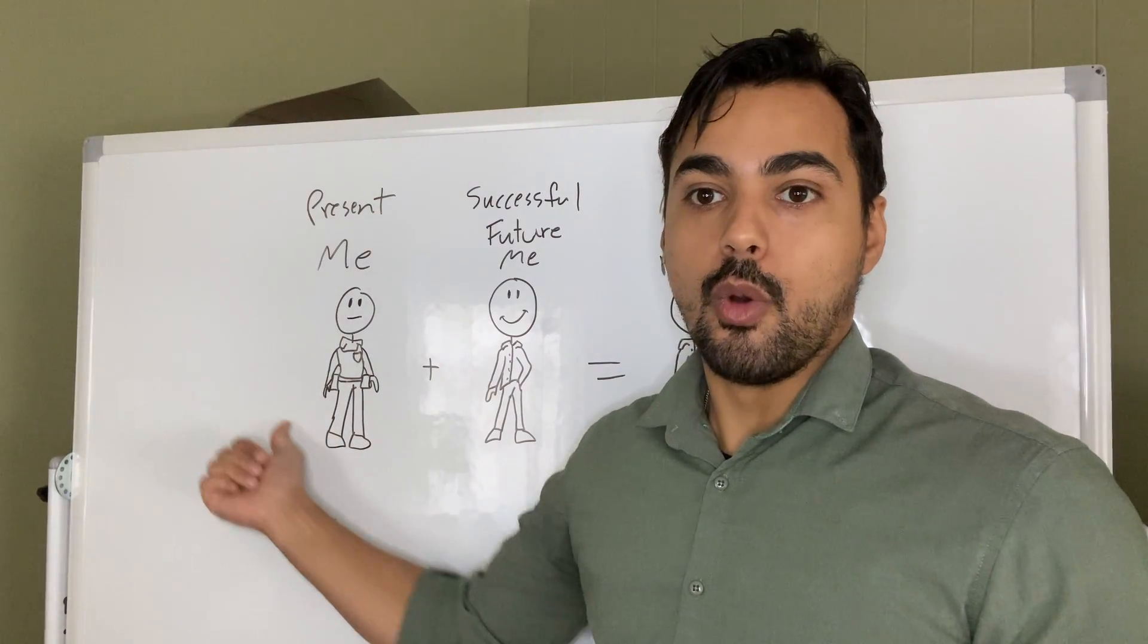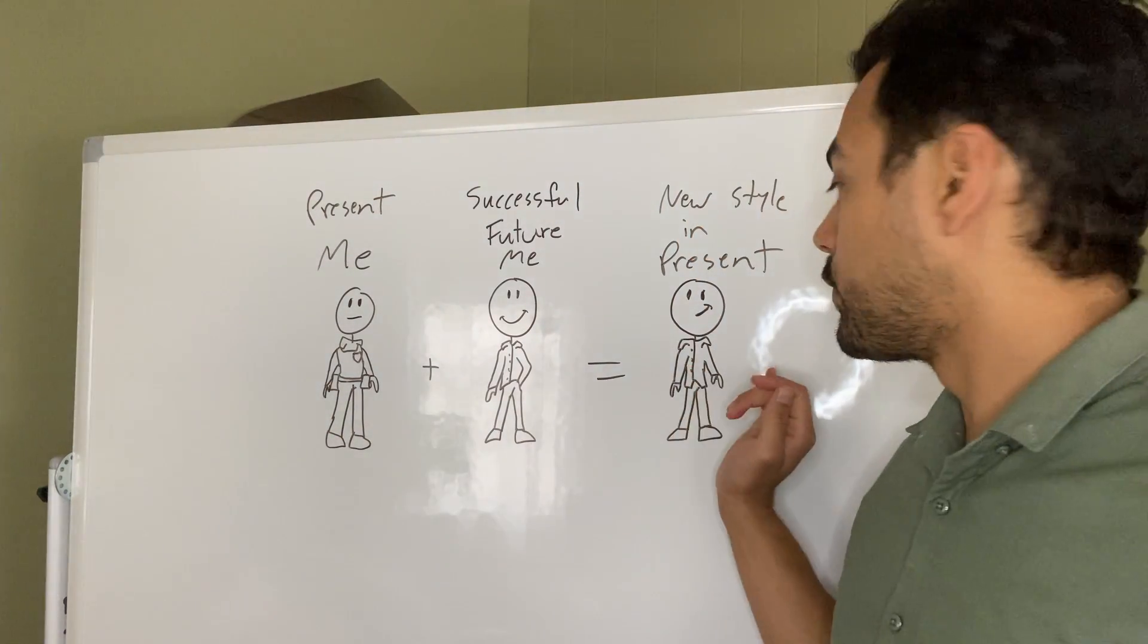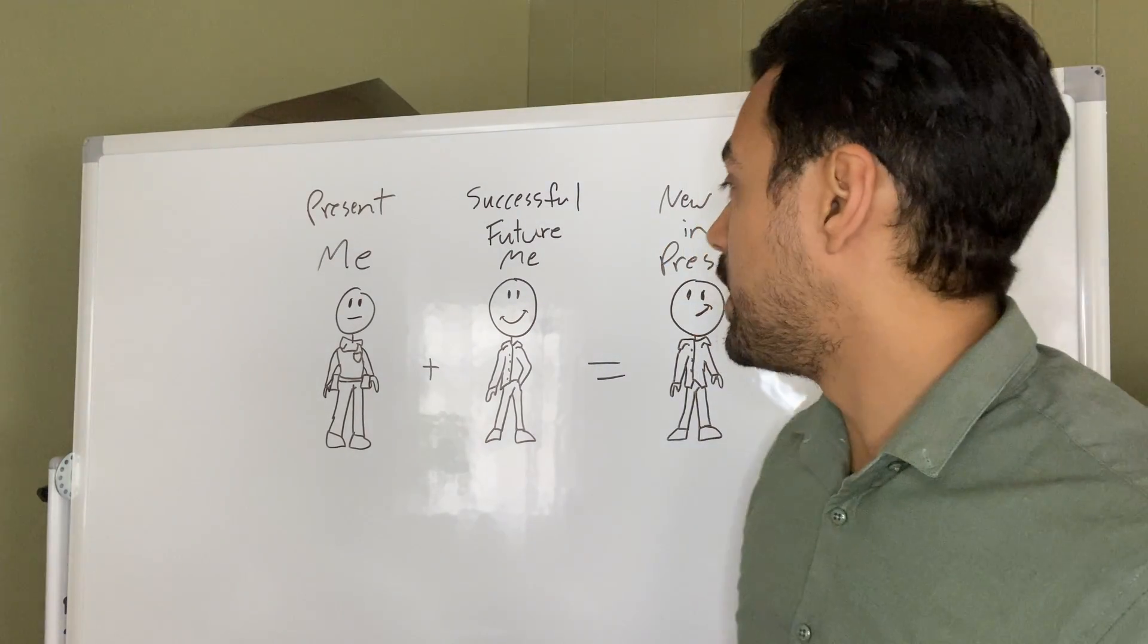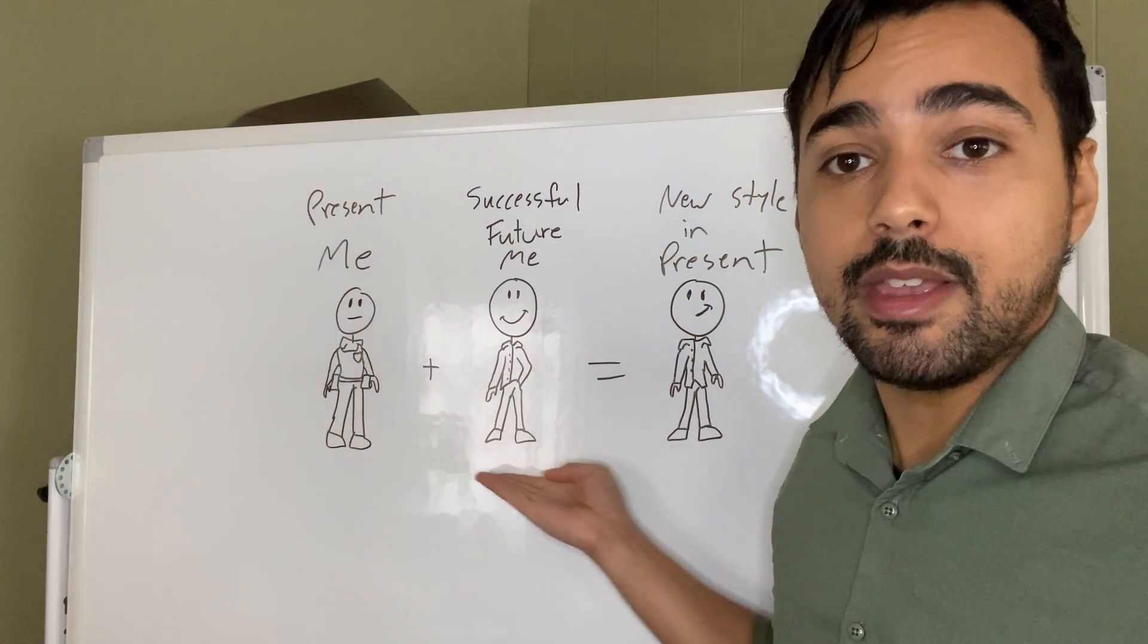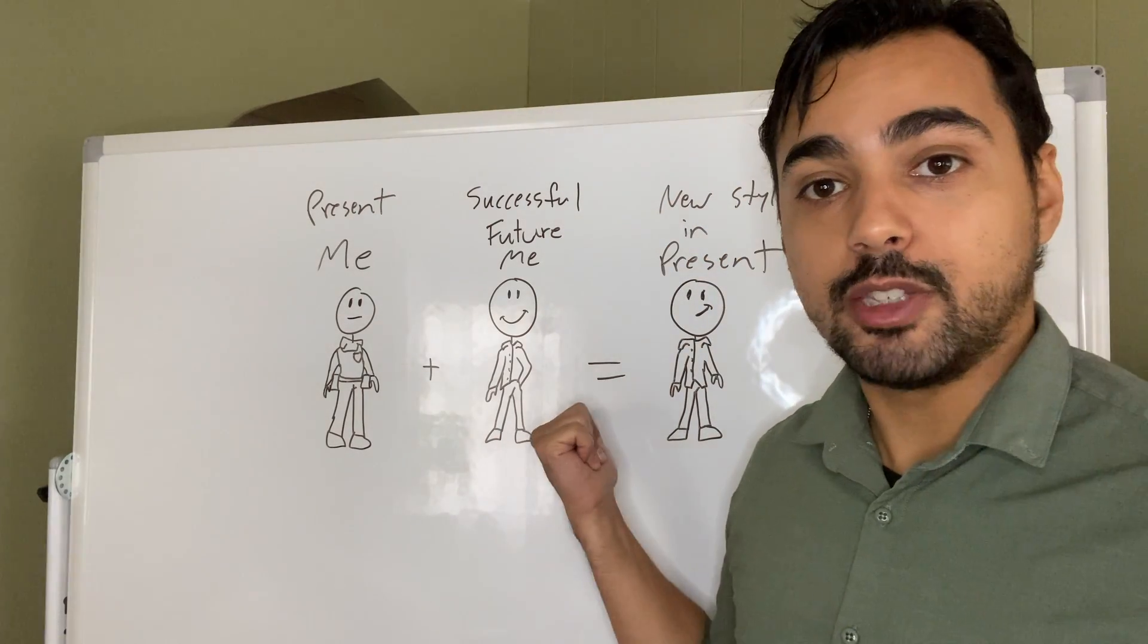For example, when I was in the police department, I was already buying button-down shirts, even though my job didn't require it. Because I knew the successful future me was going to be a guy who wears button-down shirts and a nice pair of pants.